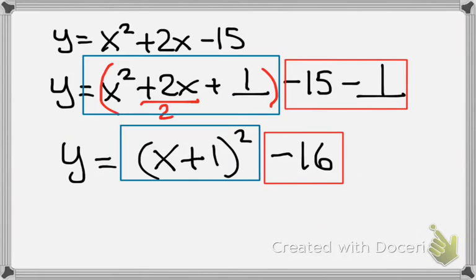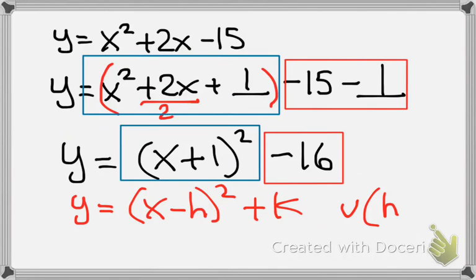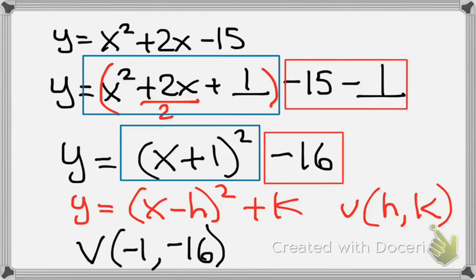So now it's in vertex form, which is, again, y equals x minus h squared plus k. And my vertex is h,k. So what is my vertex, then, of the problem we've been working on? Since it's minus h, it's going to be the opposite. So it's going to be a negative 1. And k, since it's plus k, whatever k is, it is. So it's just negative 16. And that would be my vertex.